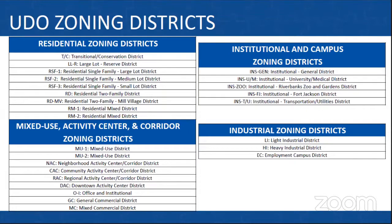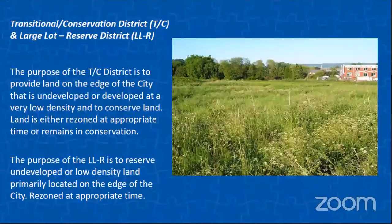We have quite a few corridor districts, because what we've heard over the years through our different planning processes is that people want to be able to live, work, and play along these corridors. We also have some new districts that accommodate our many institutional users here in the city — we are a state of government and institutions, and the ordinance recognizes that. Finally, industrial zoning districts are a very important part of our economy. I'll turn it over to Rachel to begin going through these districts.